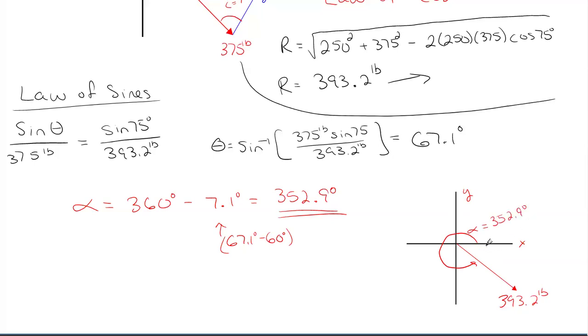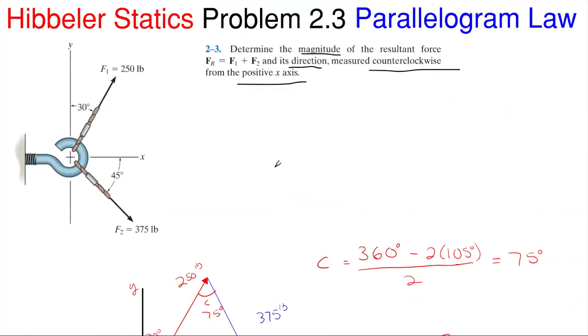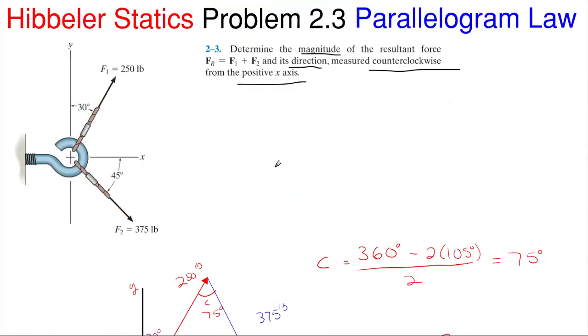In reality, someone would be like it's just 7.1 degrees here. Either way is fine in my book, but the problem was asking for the counterclockwise measurement of 352.9 degrees. So this would be your final answer. And that's how you would work the parallelogram rule or law to solve this problem 2.3 in Hibbler statics. I hope this video was helpful. If you want to see more problems solved, please check out the other videos on our channel. Also, please like this video, leave a positive comment below, and subscribe to the channel because that does help us out tremendously. Thank you for watching, and I hope you have a fantastic day.